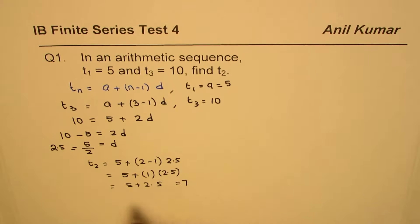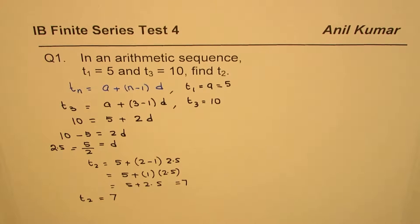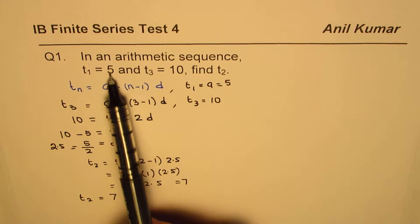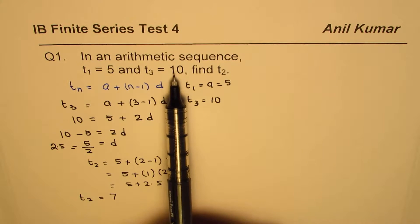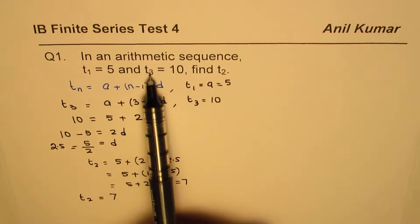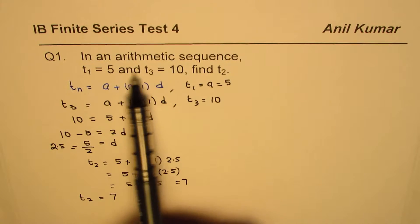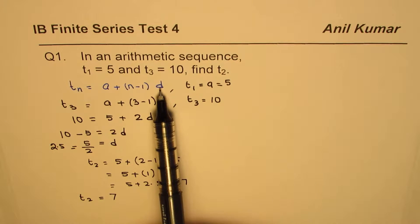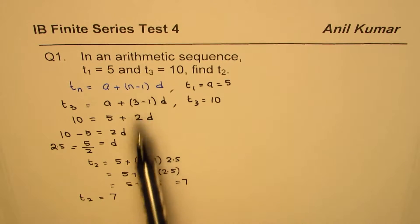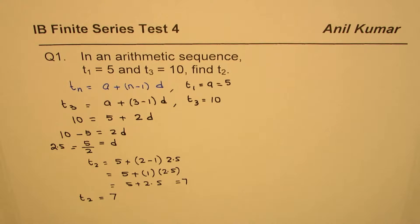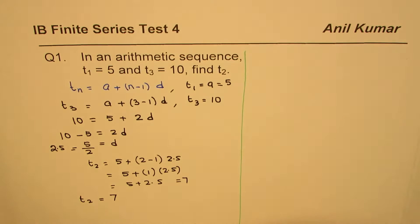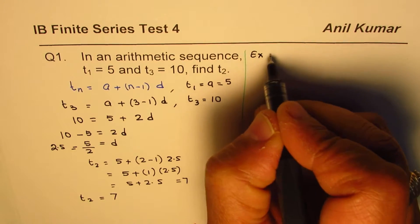So t2 equals 7. Another way to find that answer: we know the first term and the third term, with t2 in between, so the common difference has been added twice. Subtracting 5 from 10 gives 5; dividing 5 by 2 gives d. Then add d to the first term to get t2. But my preference is to follow the formulas you have learned and solve each question that way.